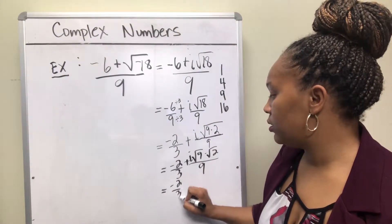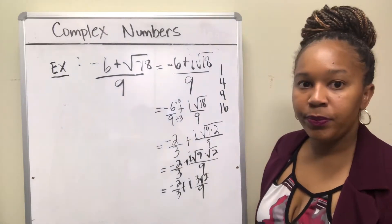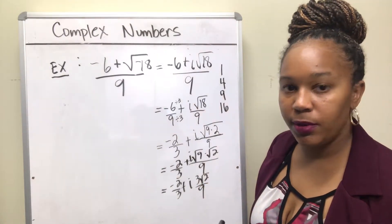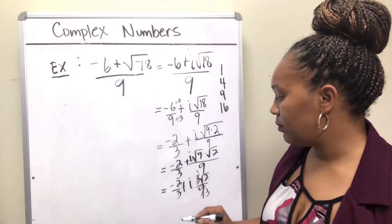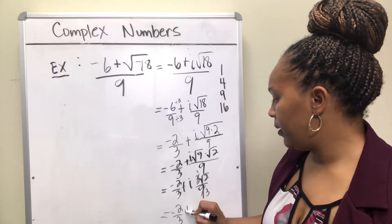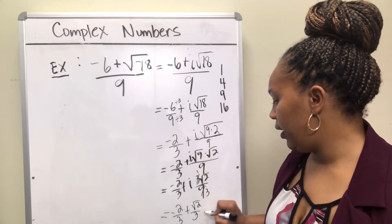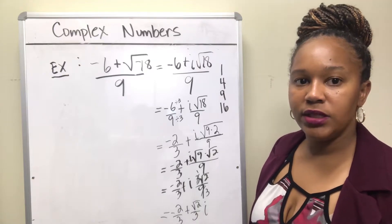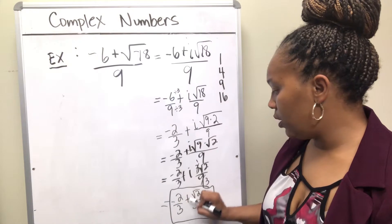That gives us negative two-thirds plus i times 3√2 all over 9. The 3 and the 9 can be reduced — 3 goes into 3 once and into 9 three times — so the final answer is negative two-thirds plus the square root of two over three times i.